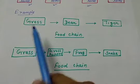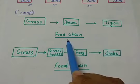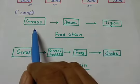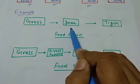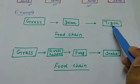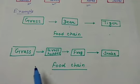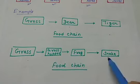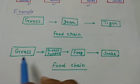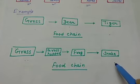For example, in the grass-deer-tiger food chain: grass is the producer at first level, deer is herbivorous and primary consumer at second level, tiger is secondary consumer and carnivorous at third level. In another example: grass is the producer, grasshopper is the primary consumer at level 2, frog is the secondary consumer at level 3, snake is the tertiary consumer at level 4.